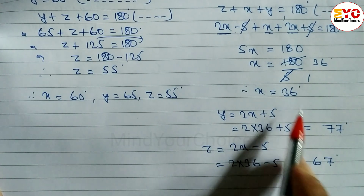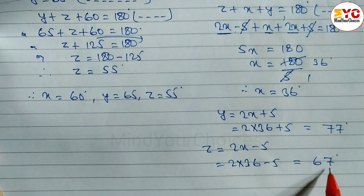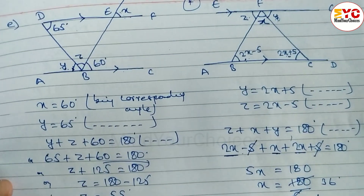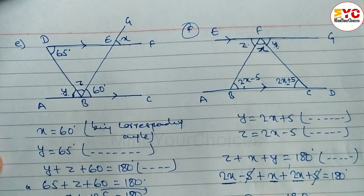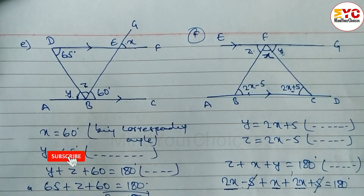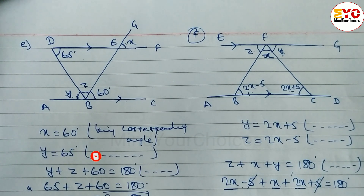So the value of x is equal to 36, value of y is 77, and value of z is equal to 67. Hope you understand this video related to triangles geometry. If you understand, please hit the like button, and if you are new to my channel please consider subscribing and do not forget to hit the bell button to get notifications of upcoming videos. Thanks for watching till last — keep supporting and keep sharing.